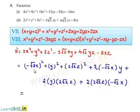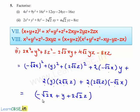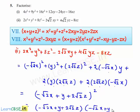In place of x we have minus root 2x, in place of y we have y, and in place of z we have 2 root 2z. So this can be written as minus root 2x plus y plus 2 root 2z whole square, which is written as minus root 2x plus y plus 2 root 2z multiplied by minus root 2x plus y plus 2 root 2z.